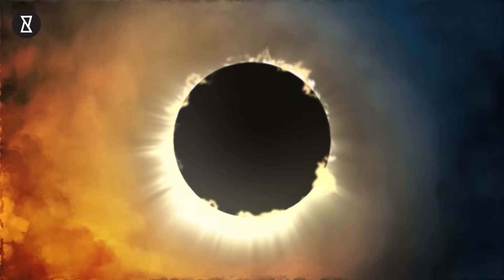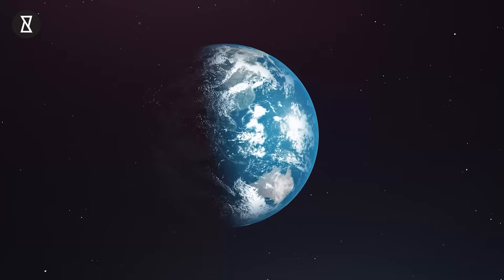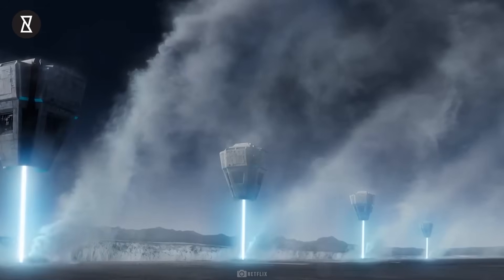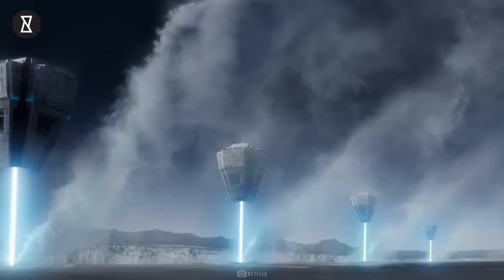Because only a tiny fraction of a star's energy emissions reaches the surface of any orbiting planet, building structures encircling a star would enable a civilization to harvest far more energy.